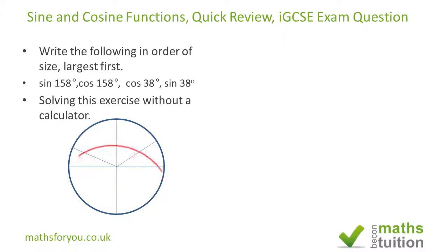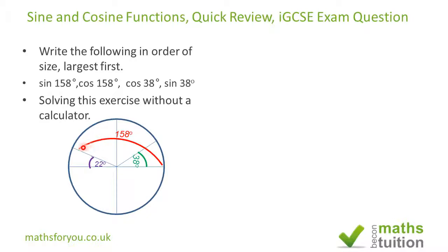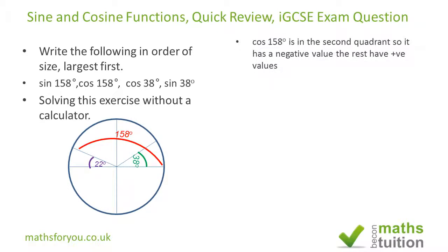My starting point has to be the four quadrants — in this case two quadrants only. I've put in all the angles given to us, and I've also got 22 degrees because 180 minus 158 gives us 22 degrees. In the first quadrant all values are positive, whereas in the second quadrant, where we find 158 degrees, all values are negative except for sine. That means cos 158 degrees, found in the second quadrant, is negative.